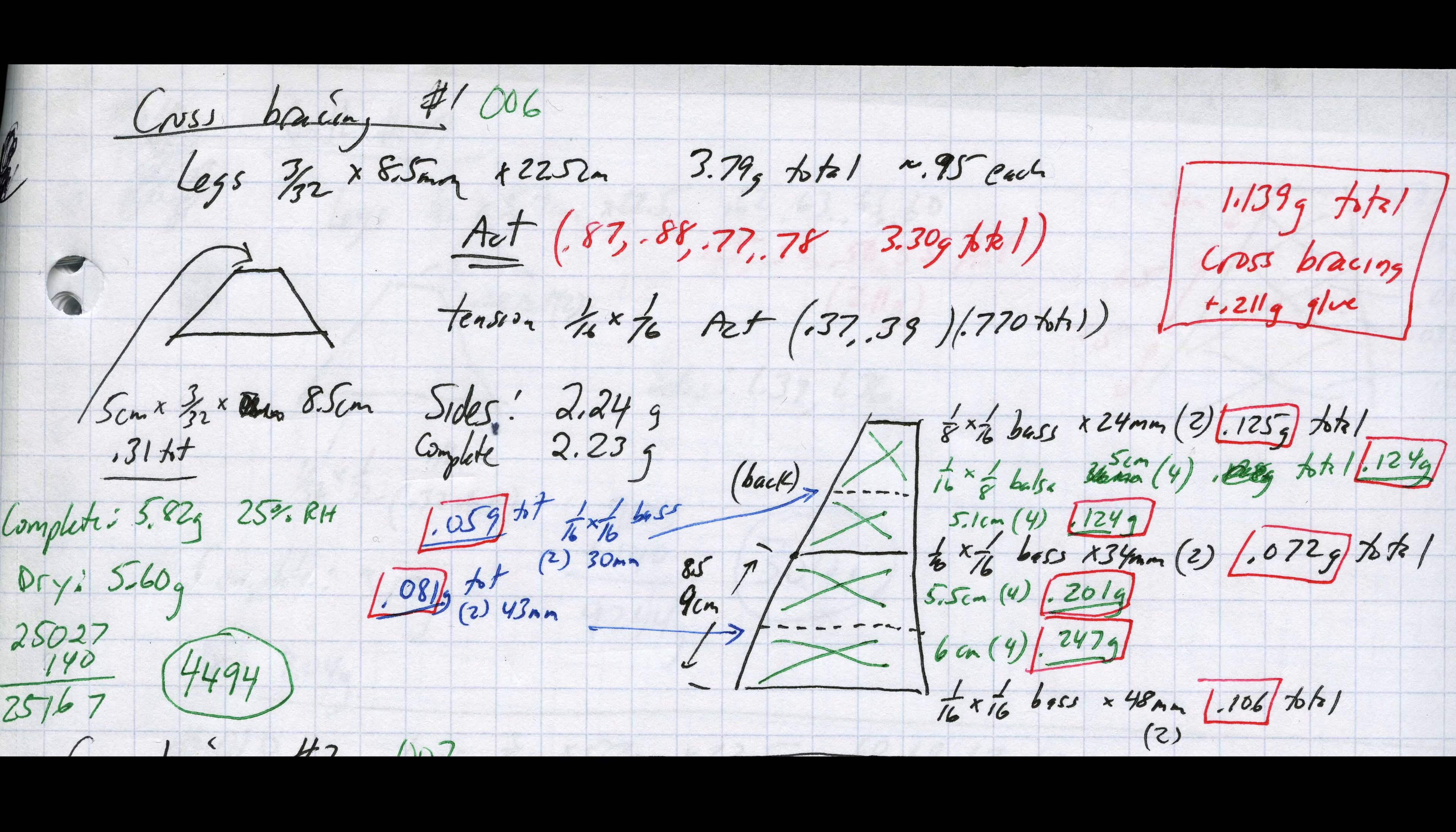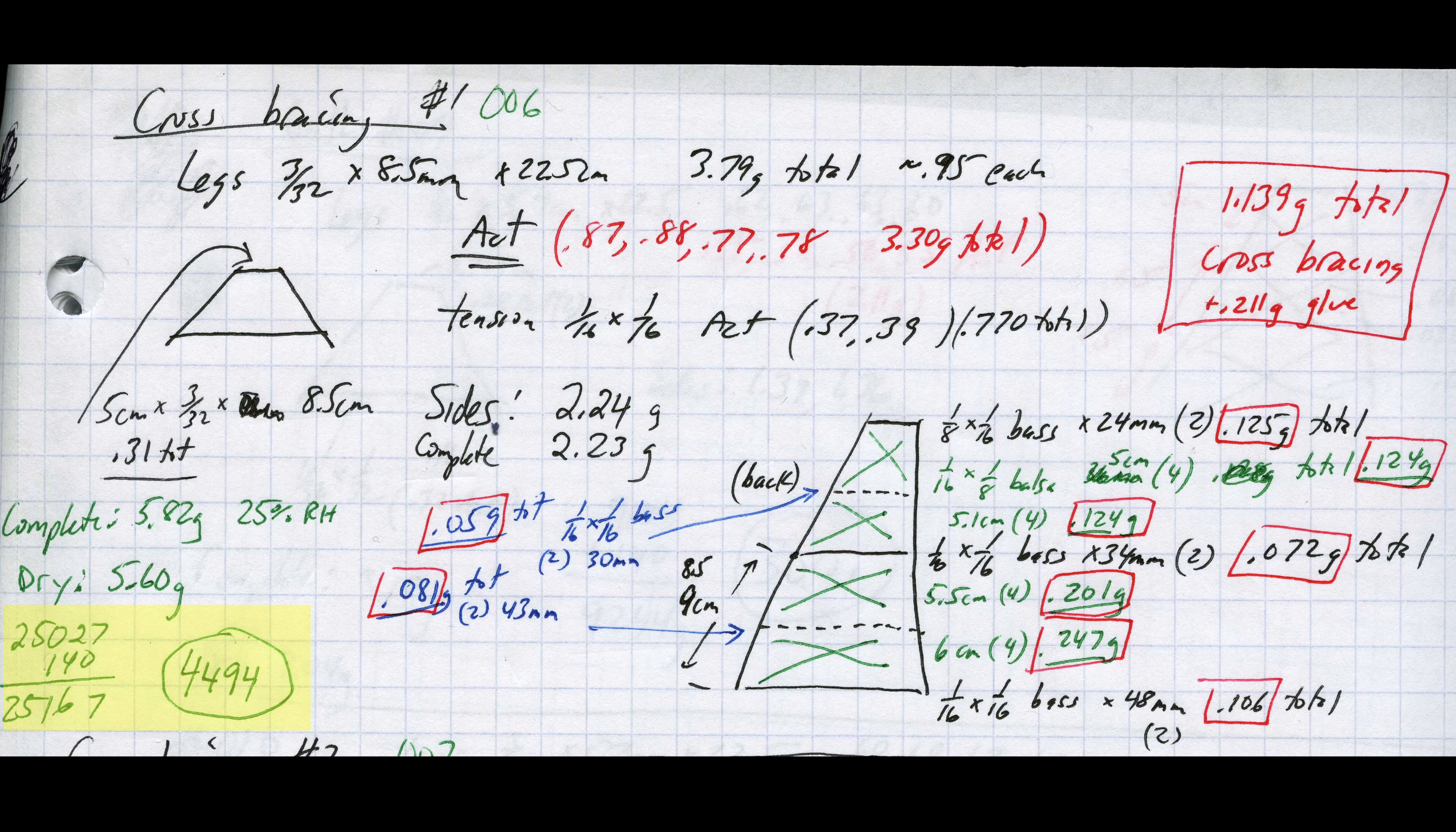An interesting side note, this was the bridge I featured in the exploding bridge video and at the time was the highest efficiency bridge I had ever built. It held over 25 kilograms for an efficiency of 4494. That means it was an extremely well-balanced bridge, but it was optimal at 25 kilograms, not 15 kilograms. Getting that level of efficiency at 15 kilograms is what the rest of this challenge would be all about.